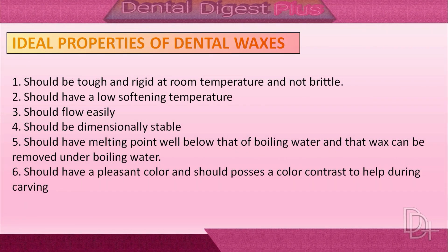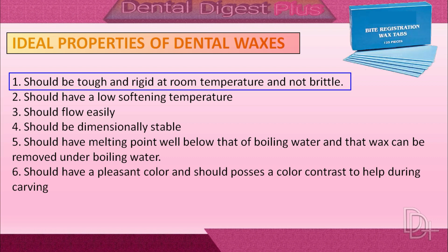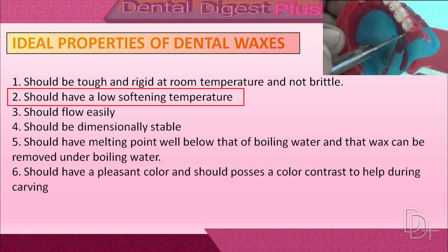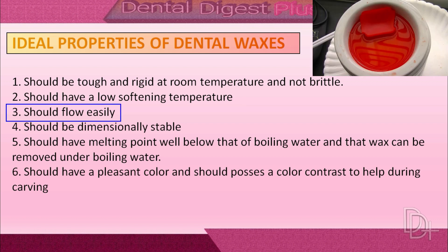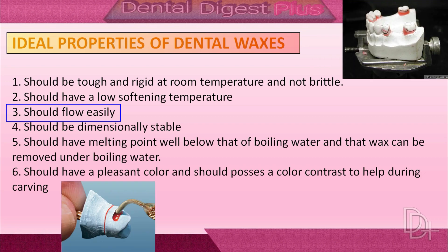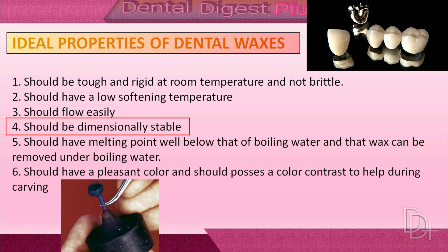Now let's talk about the ideal properties of dental waxes. First, dental wax should be tough and rigid at room temperature and should not be brittle, so that we can manipulate it easily. Second, dental wax should have a low softening temperature so it can be melted quickly using warm hand instruments. Third, dental wax should flow easily so that it can reach undercut areas.